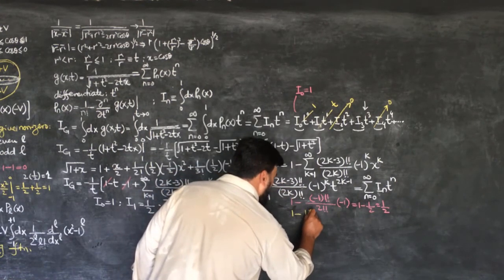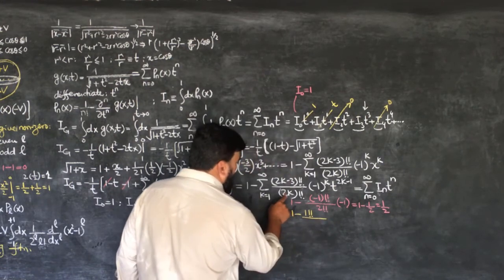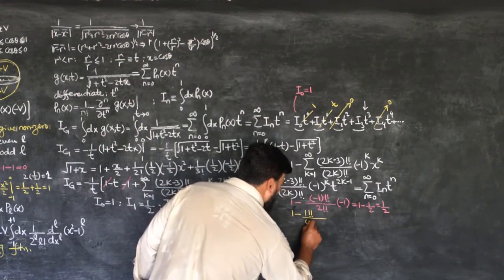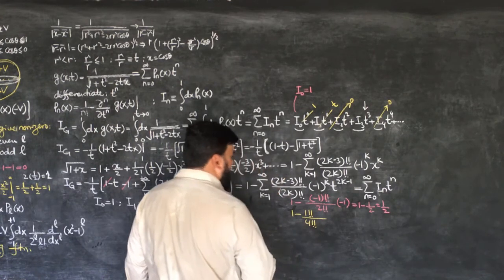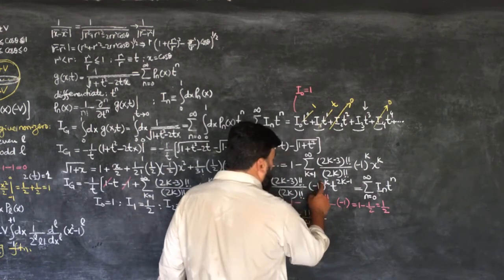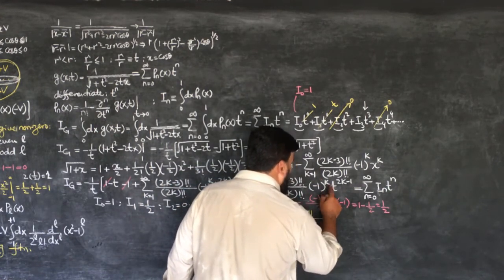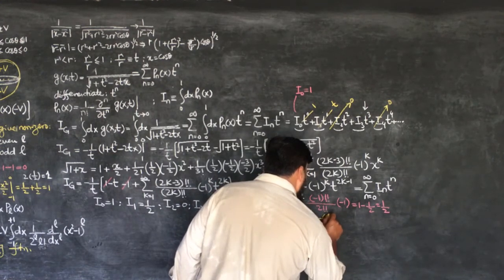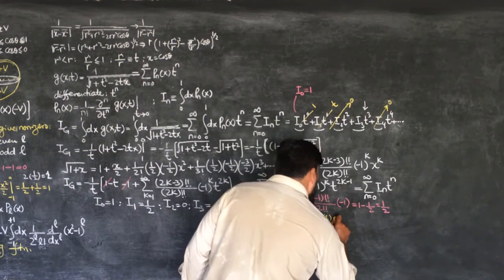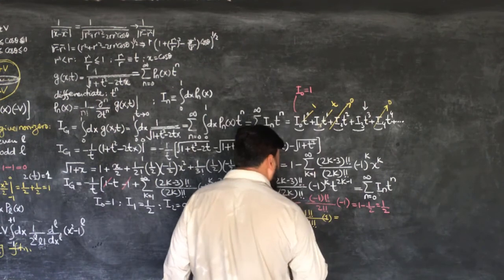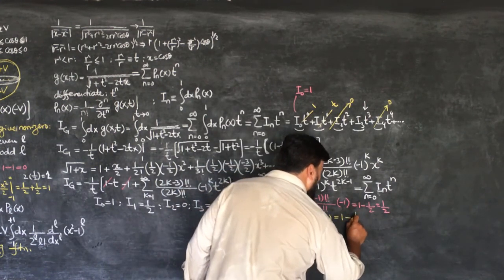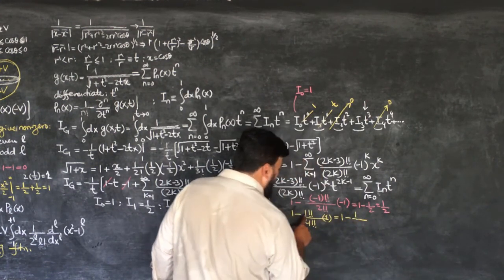Continuing the calculation for I_3: with k=2, we have 1 double factorial over 4 double factorial, and (−1)^2 = 1. So 1!! = 1 and 4!! = 4, giving the coefficient. The instructor works through the arithmetic to obtain the final value of I_3, completing the pattern of Legendre polynomial integrals over [0,1].